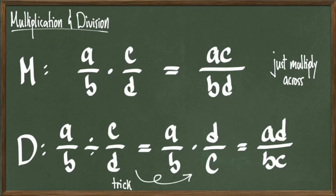Again, the trick is to take the fraction that is on the right, flip it upside down, and switch division to multiplication, and then just multiply. That's how you divide fractions.